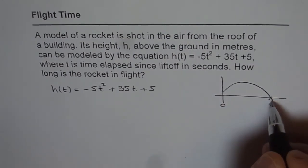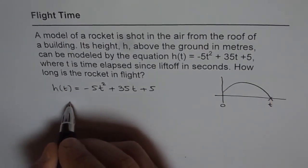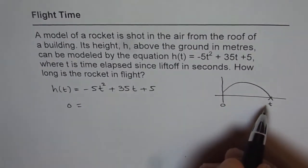So when the rocket hits the ground, at that time height becomes zero. So we can substitute zero here and find the time when this happens, right?